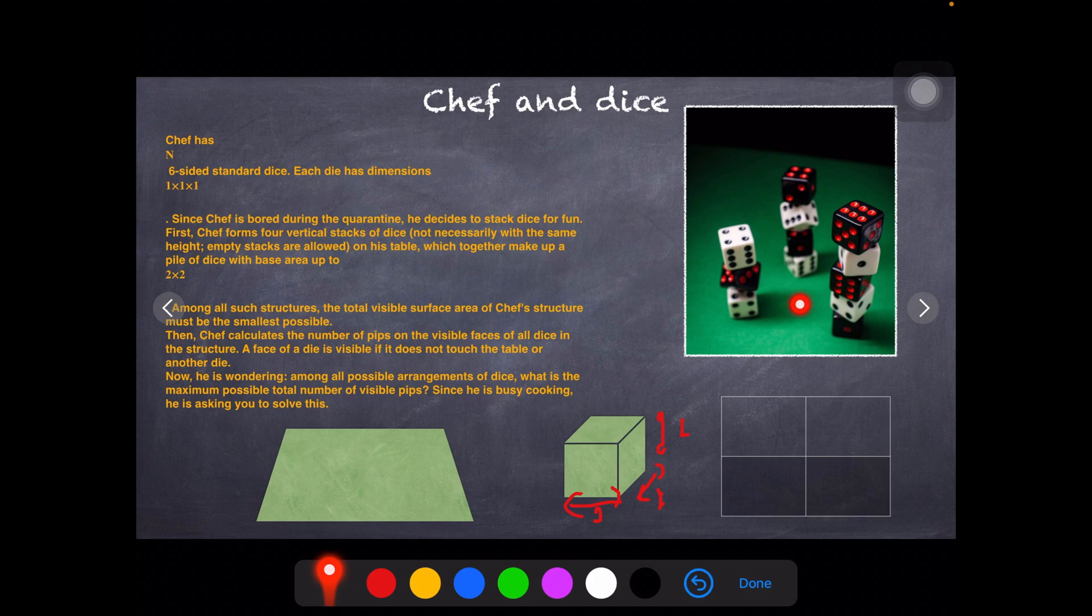First, Chef forms four vertical stacks of dice, not necessarily with the same height. Empty stacks are allowed, so you don't have to fill all the spaces. There can be empty stacks, but there are four strands of dice.